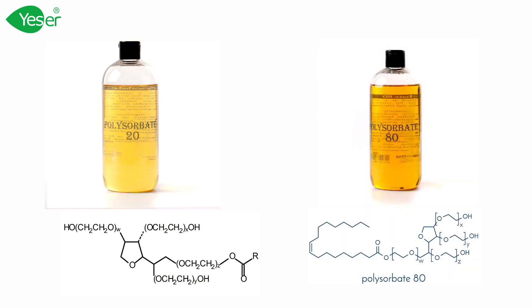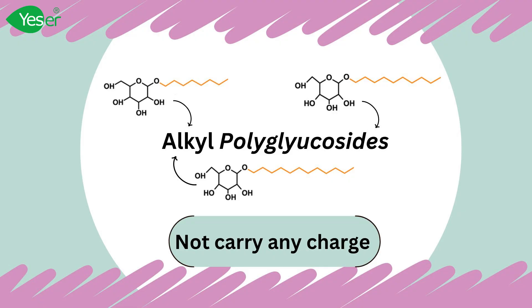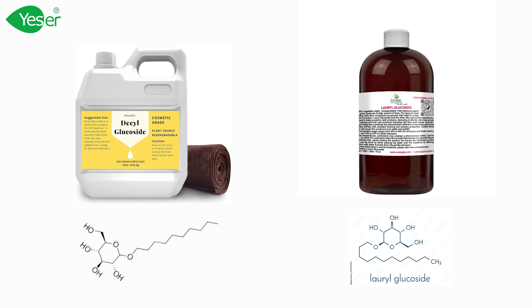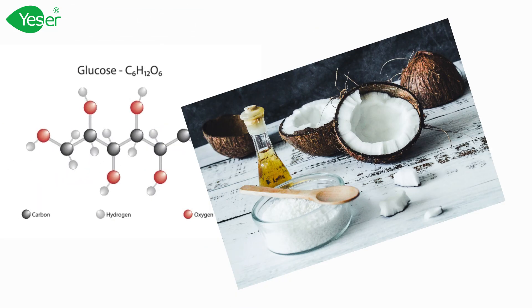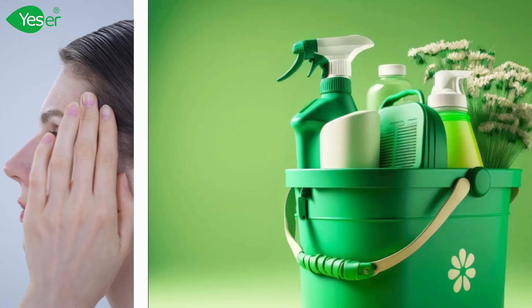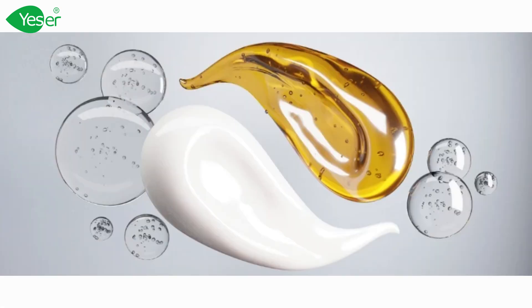Examples of non-ionic surfactants include polysorbates, such as polysorbate 20 and polysorbate 80, which are used as emulsifiers and solubilizers in creams, lotions, and shampoos. Next are alkyl polyglucosides, or APG, such as decyl glucoside and lauryl glucoside — derived from natural sources like glucose and coconut oil, used in mild and eco-friendly cleansers. Next are ethoxylated alcohols, such as Ceteareth-20, commonly found in lotions and cleansers as emulsifiers and solubilizers.